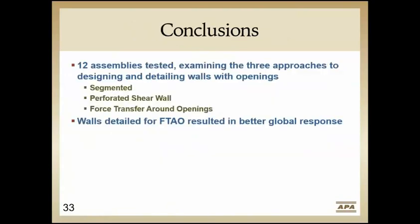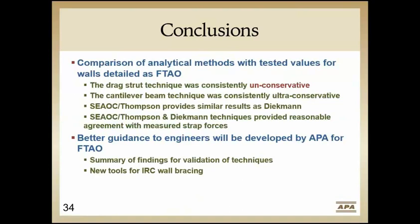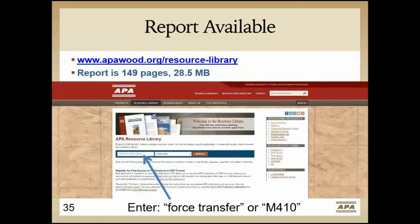Our conclusions: looking at these 12 wall configurations and different levels of detailing, walls detailed with full FTAO resulted in better global response. The stiffness of the wall increased as well as the strength for a force transfer around opening wall in comparison to just the segmented approach. When looking at rational analysis methods, the drag strut technique was consistently unconservative, the cantilever beam was ultraconservative, which leaves you with the Diekmann and SEAOC methods. The research report is available on our website, apawood.org — under the resource library, search for force transfer or M410 to download it for free.